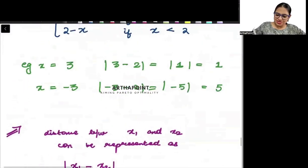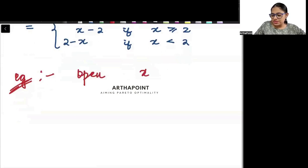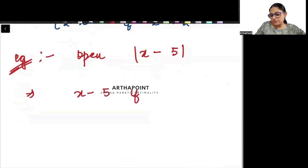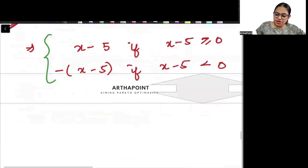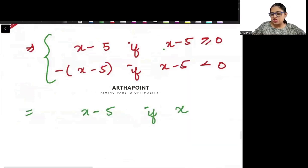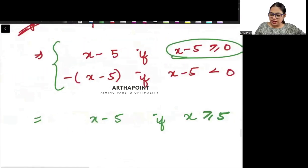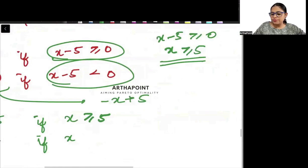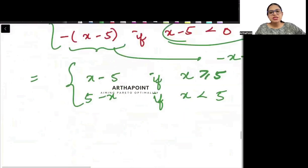Let's take one more example: open up |x − 5|. It equals (x − 5) if x − 5 ≥ 0, and minus(x − 5) if x − 5 < 0. Rewriting: x − 5 ≥ 0 means x ≥ 5, so we get (x − 5). And minus(x − 5) = 5 − x when x < 5. So |x − 5| = (x − 5) when x ≥ 5, and = (5 − x) when x < 5.